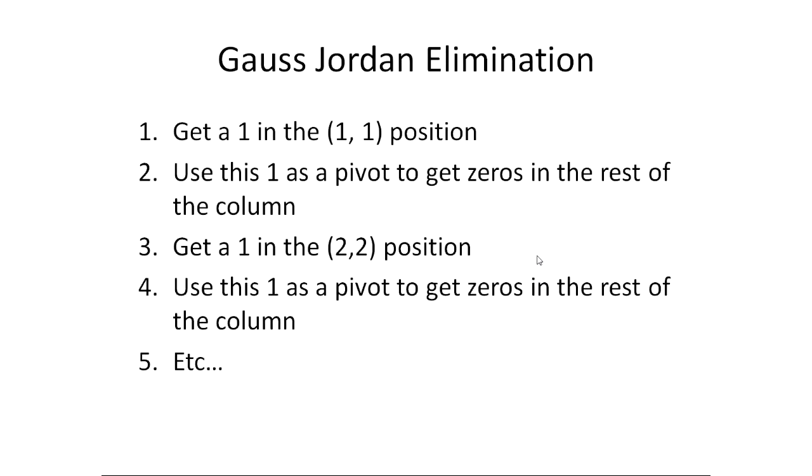So what we're going to use is something called Gauss-Jordan elimination. And this is an algorithm, a step-by-step process, to get our matrix into the form that will give us the answer. So, I'm giving you an overview here, but this isn't exactly Gauss-Jordan because we'll see in the next section that you can't always get a 1 in the (2,2) position, for instance. You have to adjust a little bit.